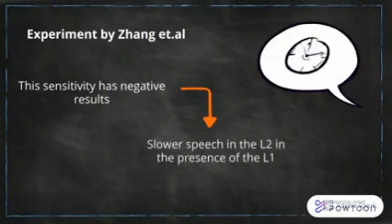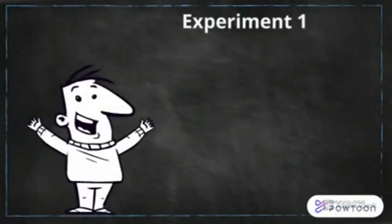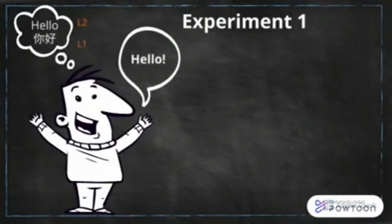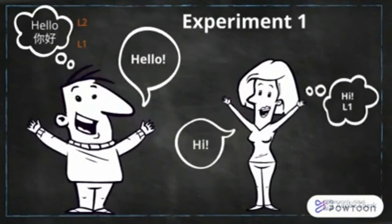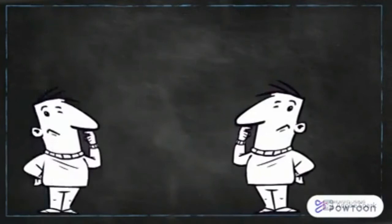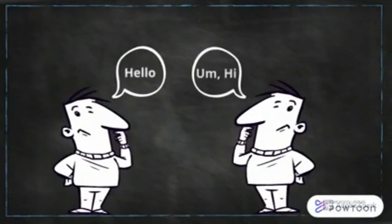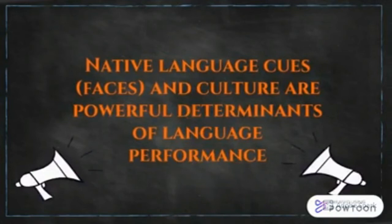Let's suppose that there is a Chinese-English bilingual in which Chinese is the L1. His performance in the L2, in English, is going to be way less hesitant in the presence of someone who doesn't share the same L1. On the contrary, if two bilinguals share the same L1 and they are speaking in the L2, their performance in the L2 is going to be more hesitant. This experiment shows us that native language cues such as faces and culture are powerful determinants of language performance.